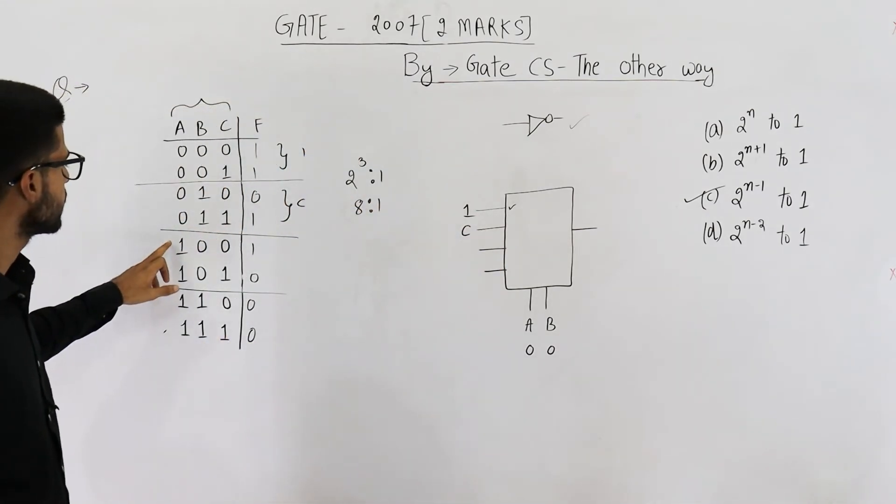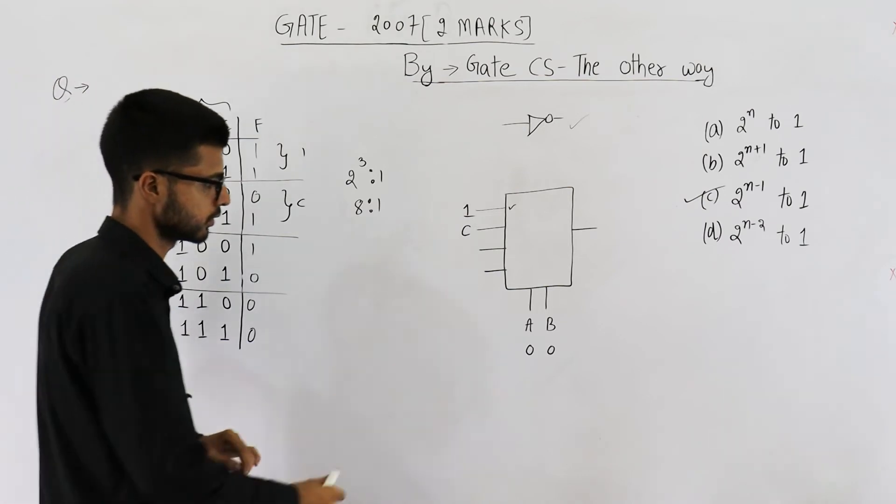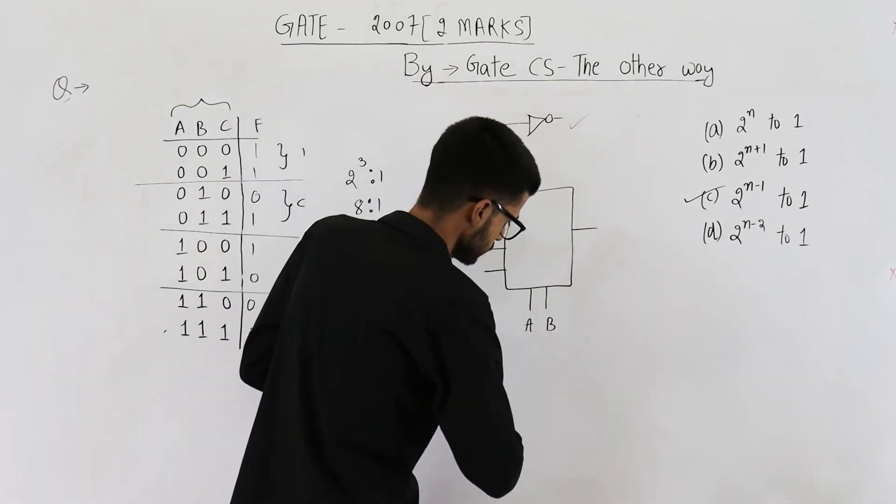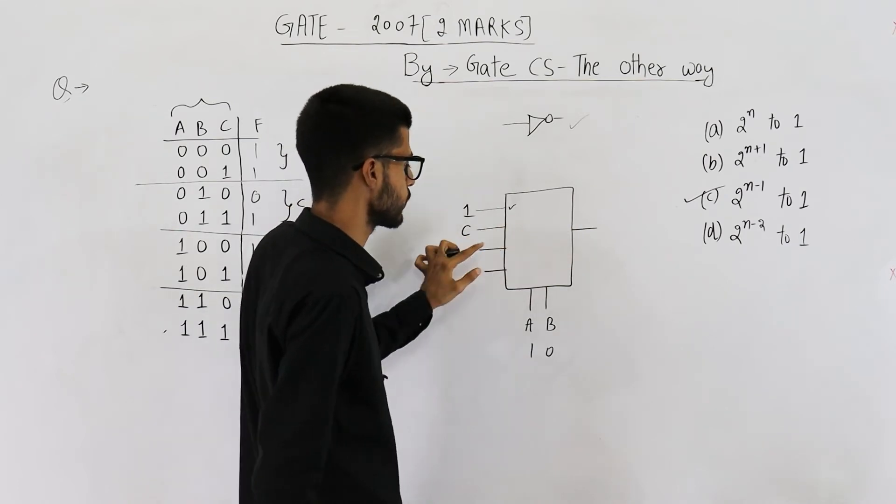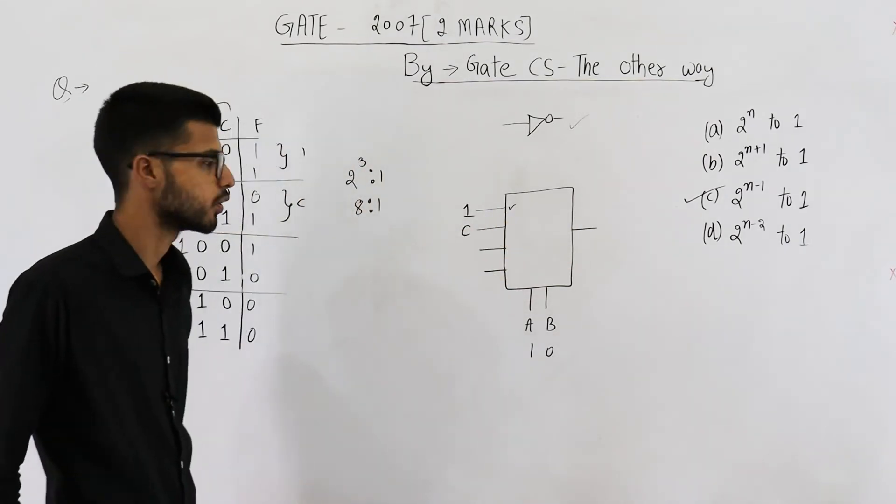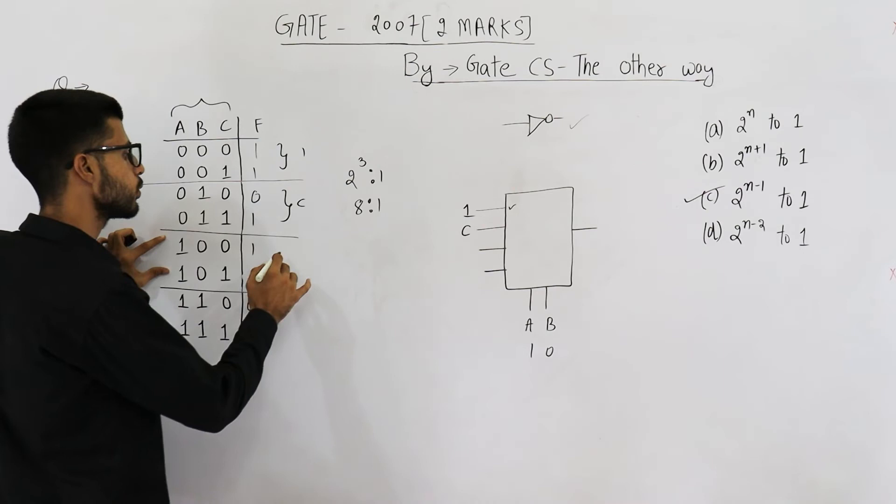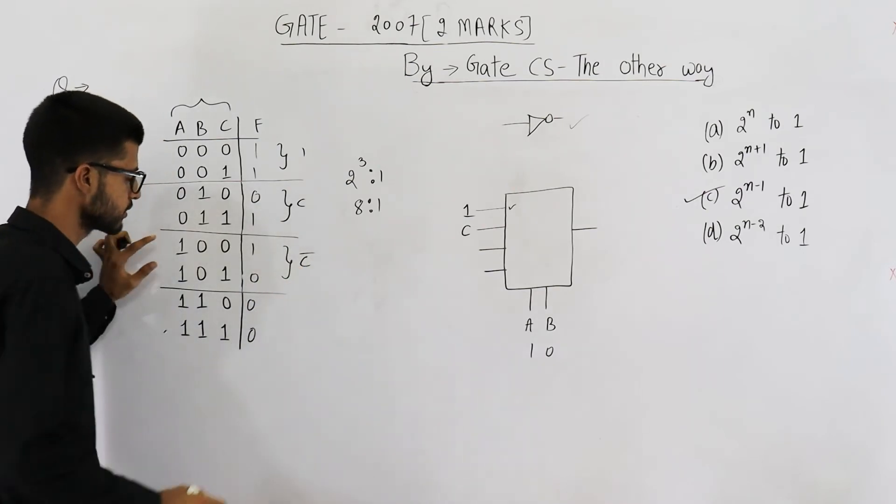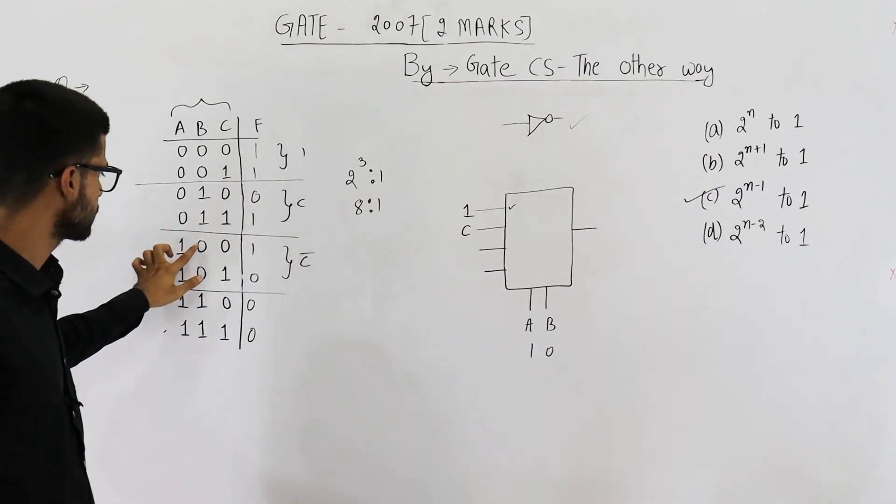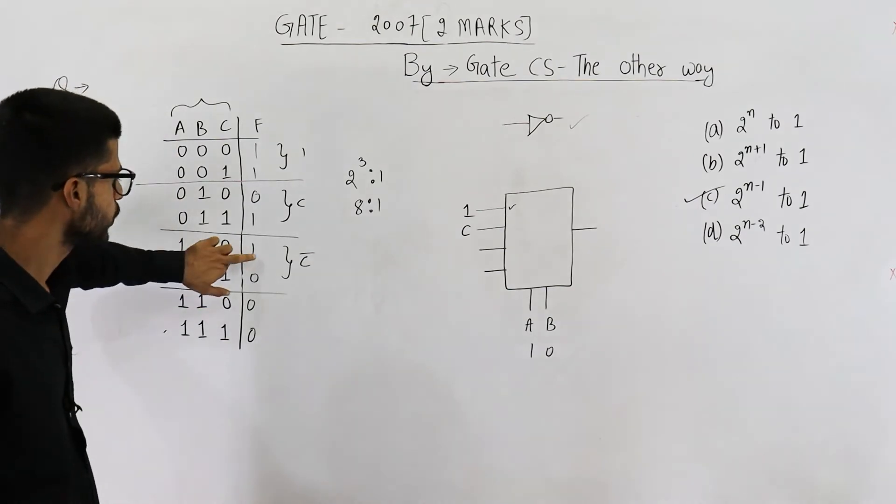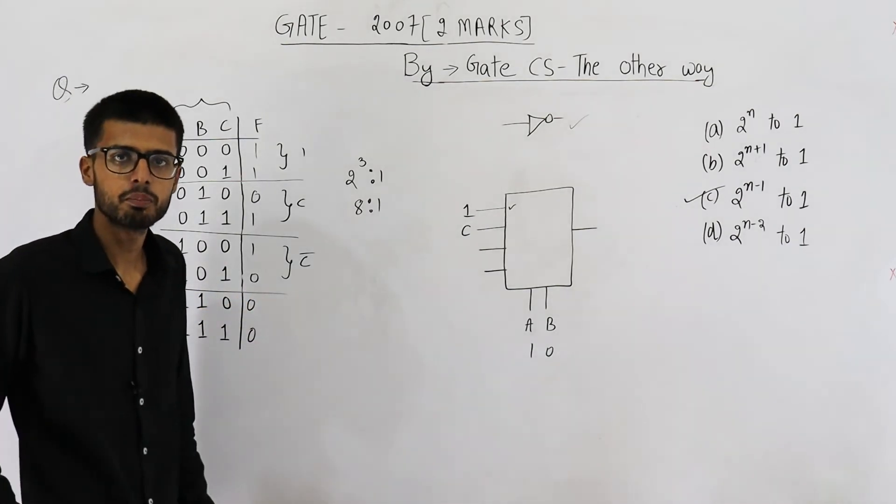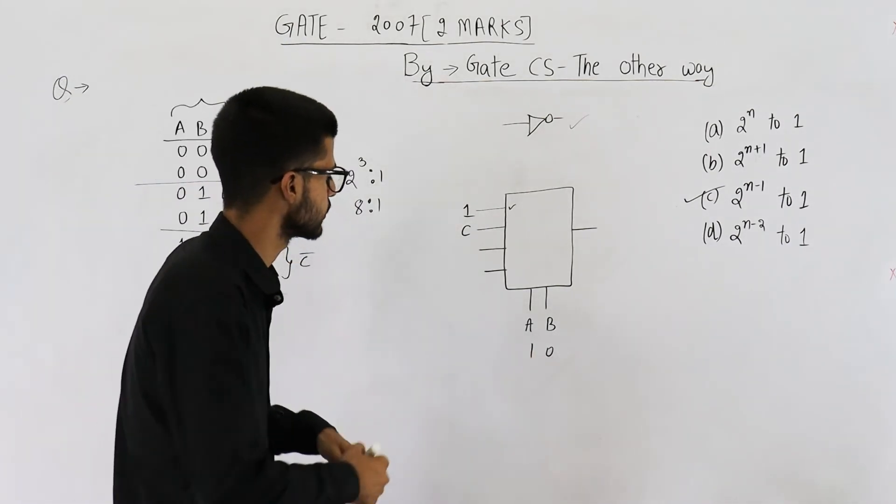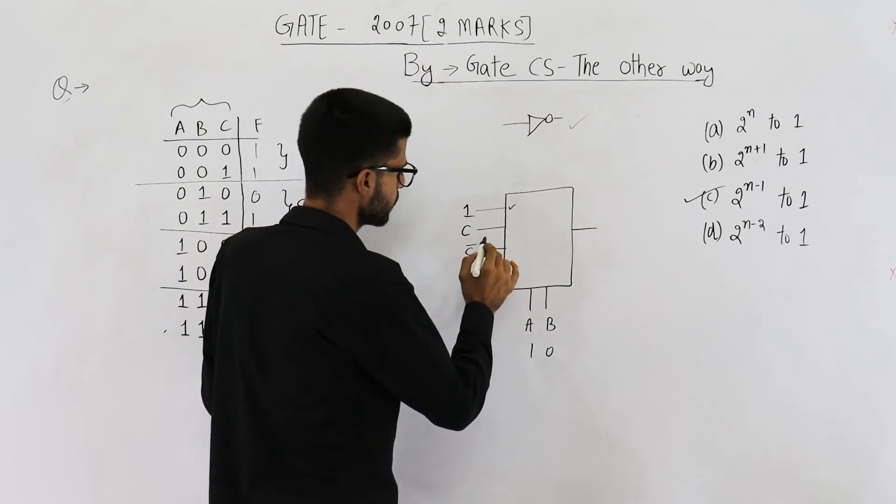In next case when the value of a and b is one zero. So the value is one zero. Mux will select this input as output. Whatever is connected here that will be the output. We want our output to be complement of c. In case one zero a and b is one zero. If c is zero output is one. If c is one output is zero. That means output is complement of c in this case. So you just connect c complement here.